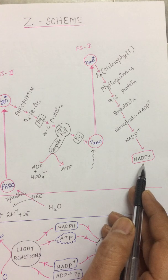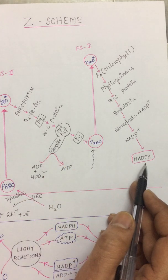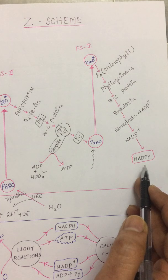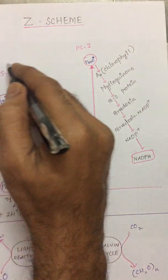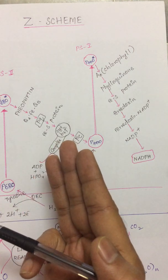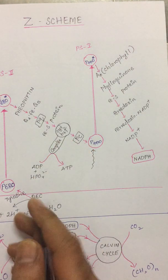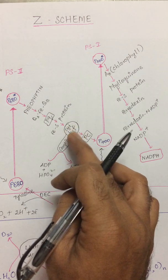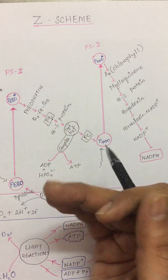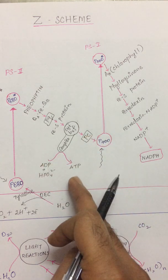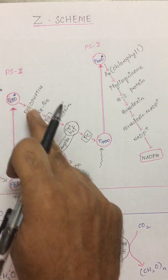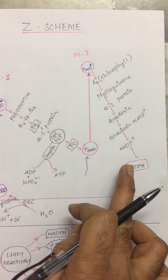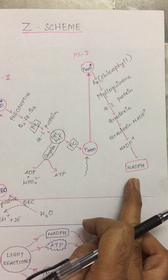NADPH is one of the end products of the photosynthetic Z scheme. In summary, we have seen the production of oxygen, ATP, and NADPH. The important functions of Photosystem II are: first, formation of oxygen; second, proton pumping — it is an electrogenic proton pump where protons pumped across the membrane create a gradient, and the energy from this gradient produces ATP; and third, electron transport, which also produces NADPH.